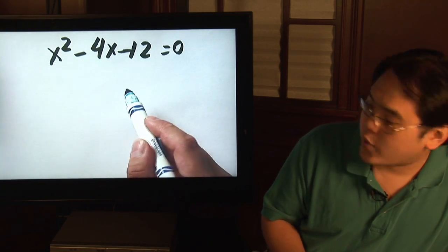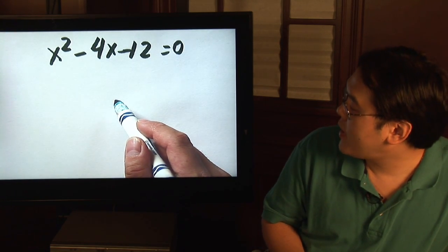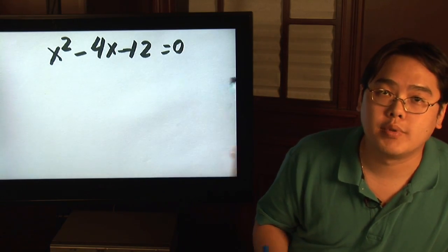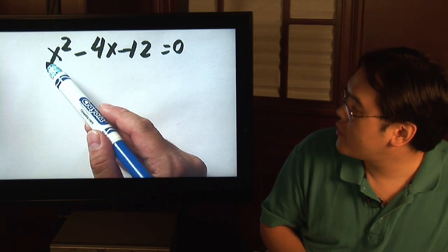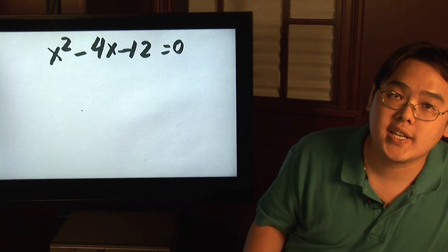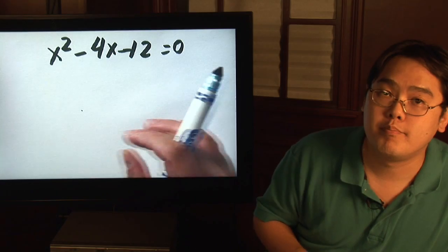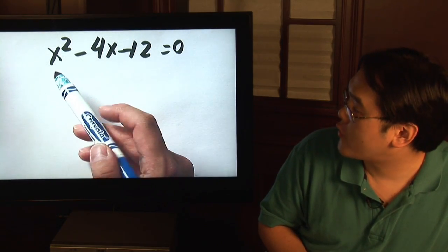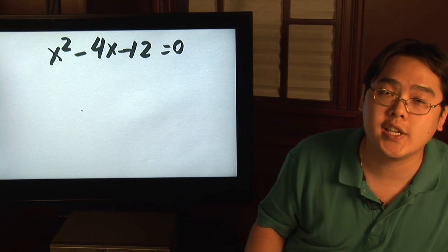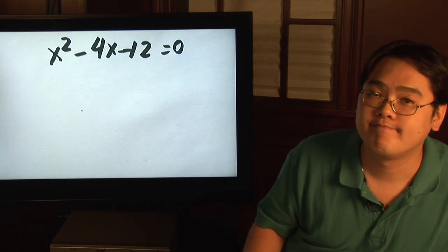You have an equation, for example, x squared minus 4x minus 12 is equal to 0. The first thing you want to be sure of when completing the square is make sure that the number in front of the x squared is just 1. If it's not 1, then it's a good idea to divide through, divide by that number in front. So for example, if that had been a 2, you want to divide everything by 2. It's always easier to work with 1x squared than anything else.